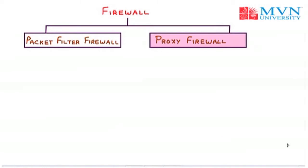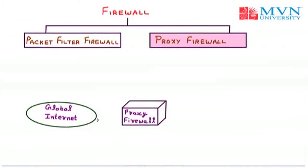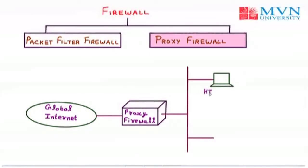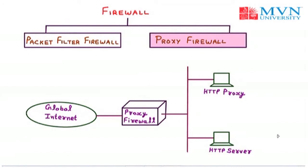The only solution is to install a proxy computer which stands between the customer computer and the corporation computer. In this diagram, the global internet is connected to the proxy firewall, which is connected to a LAN that is further connected with an HTTP proxy as well as the HTTP server. The difference between the proxy server and the main server is that the proxy acts like the main server but is not the real server — it only acts like the real one.